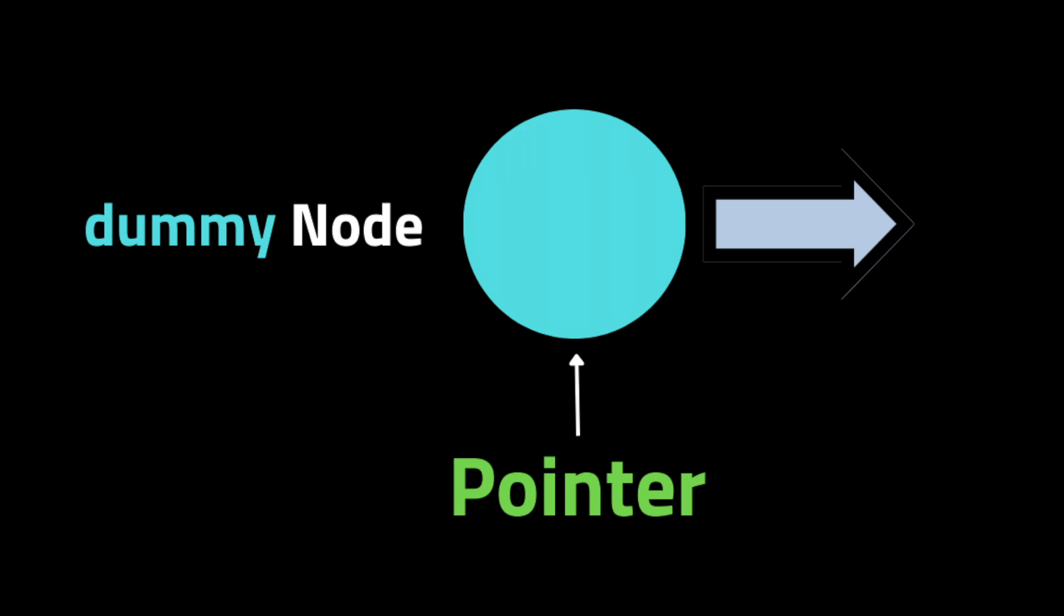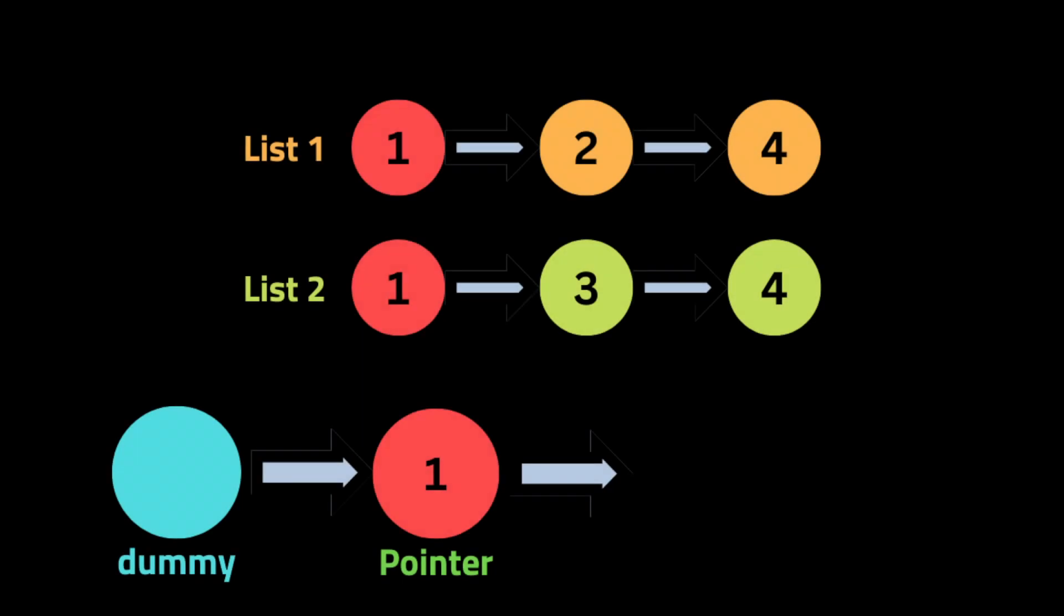Then we're gonna initialize a variable called pointer that's gonna help us add nodes to the merged list, and it's gonna be pointing to the same list node object as the dummy. Then we're gonna start iterating over the two linked lists and compare each node of the first linked list to the node of the second list.